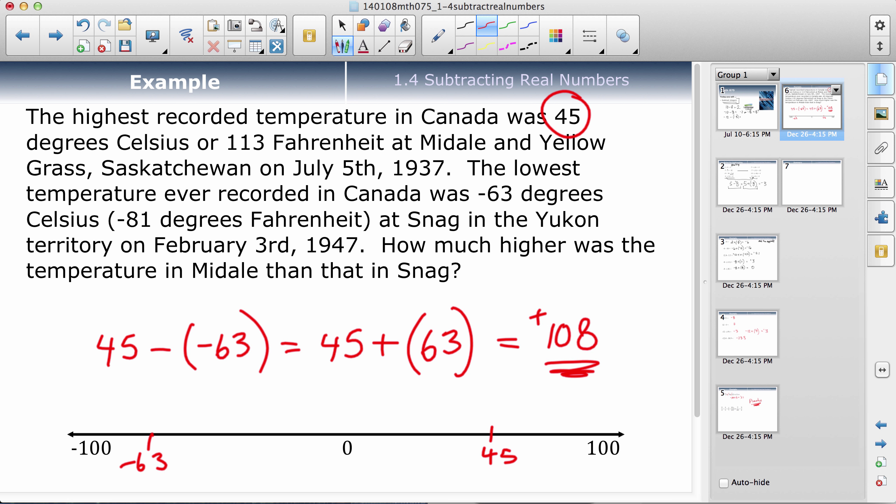In other words, the difference between those two temperatures is 108. And that makes sense. If you go from this one up to here, it'd be 63. And then you'd have to go another 45 up. So 108 degrees Celsius, that would be the difference, how much higher this one was than that.